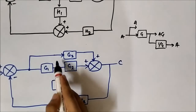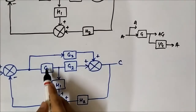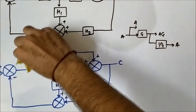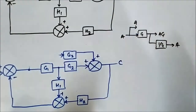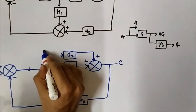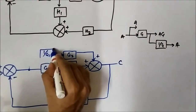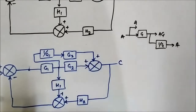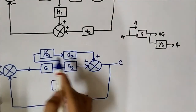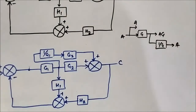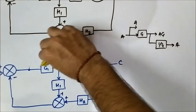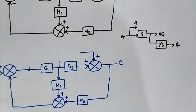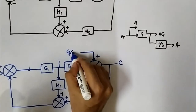When we shift this takeoff point here, we will add a 1/G1 block because G1 is in the path of this takeoff point. We will take a 1/G1 block and add it in between. We have shifted it here. These two blocks are now in cascade, so we can further simplify it as G3/G1.